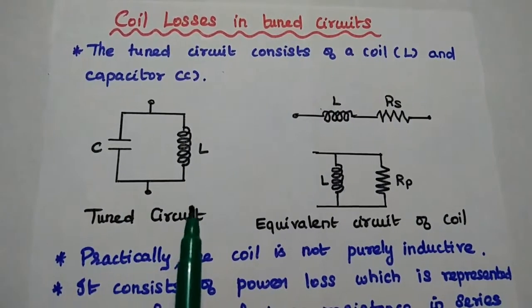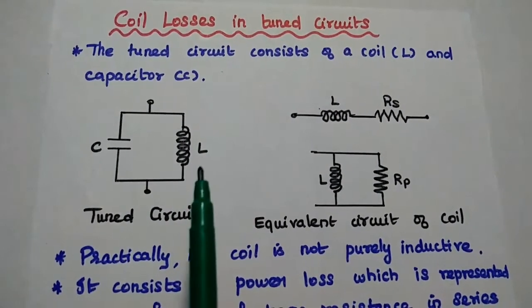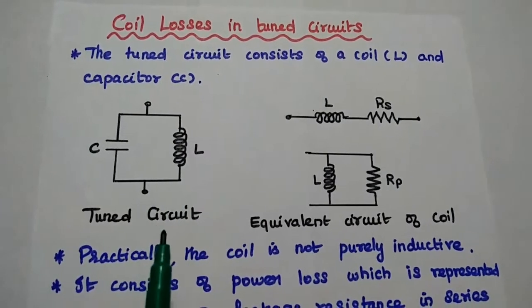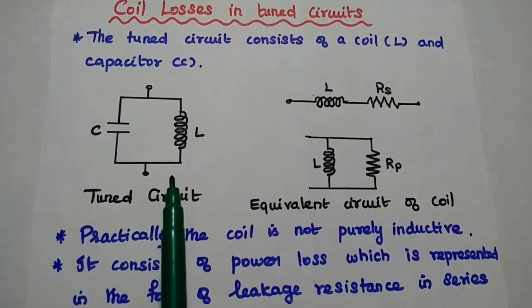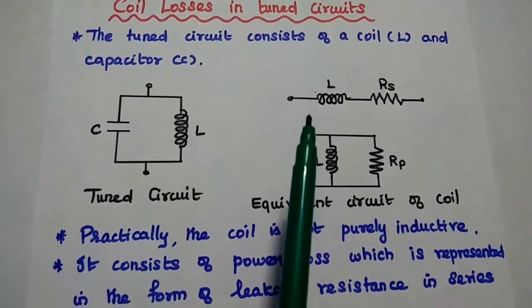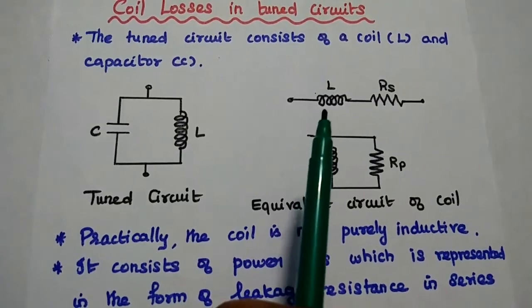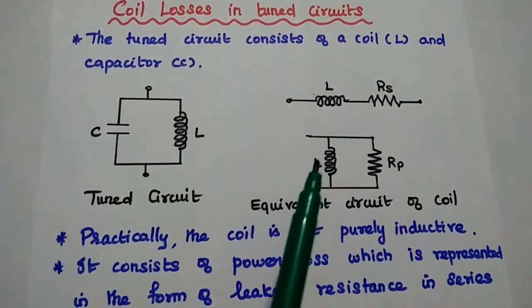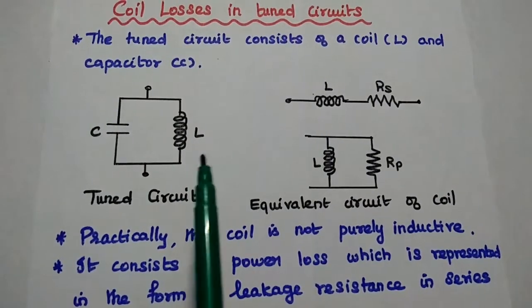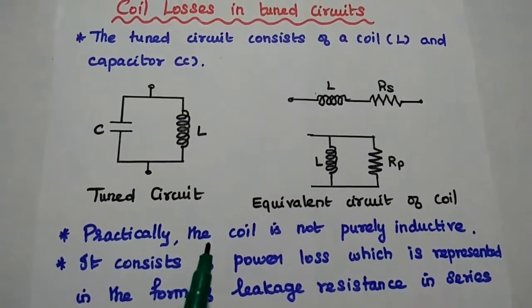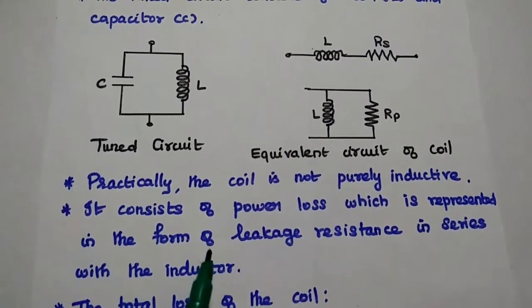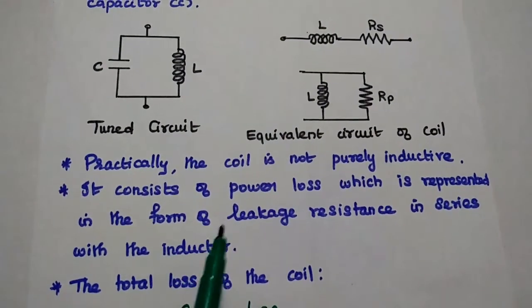But practically the coil is not purely inductive. It may have some leakages. So it consists of a power loss which is represented in the form of leakage resistance which is connected either in series or parallel with the inductor. So here this inductor should be connected with the leakage resistance to represent the losses associated with that. That is known as coil losses.